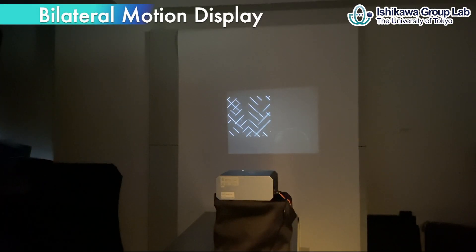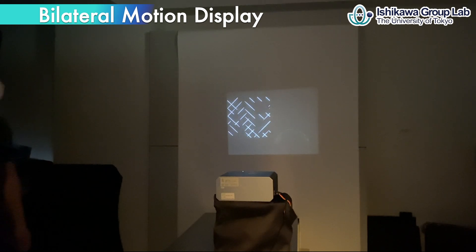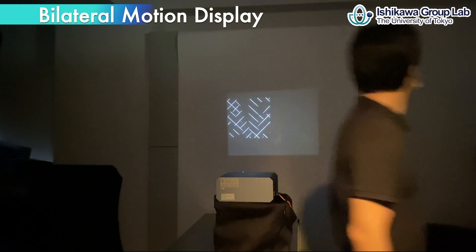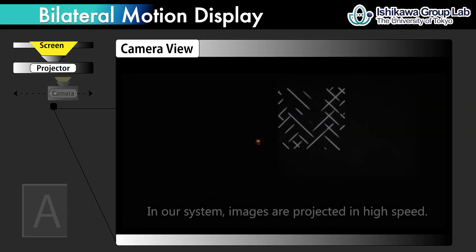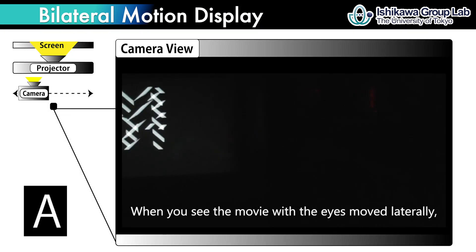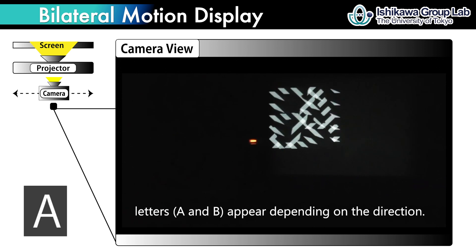In front of this system, observers' visual perception varies depending on their direction and speed. Multiple observers can recognize different letters depending on such movements.